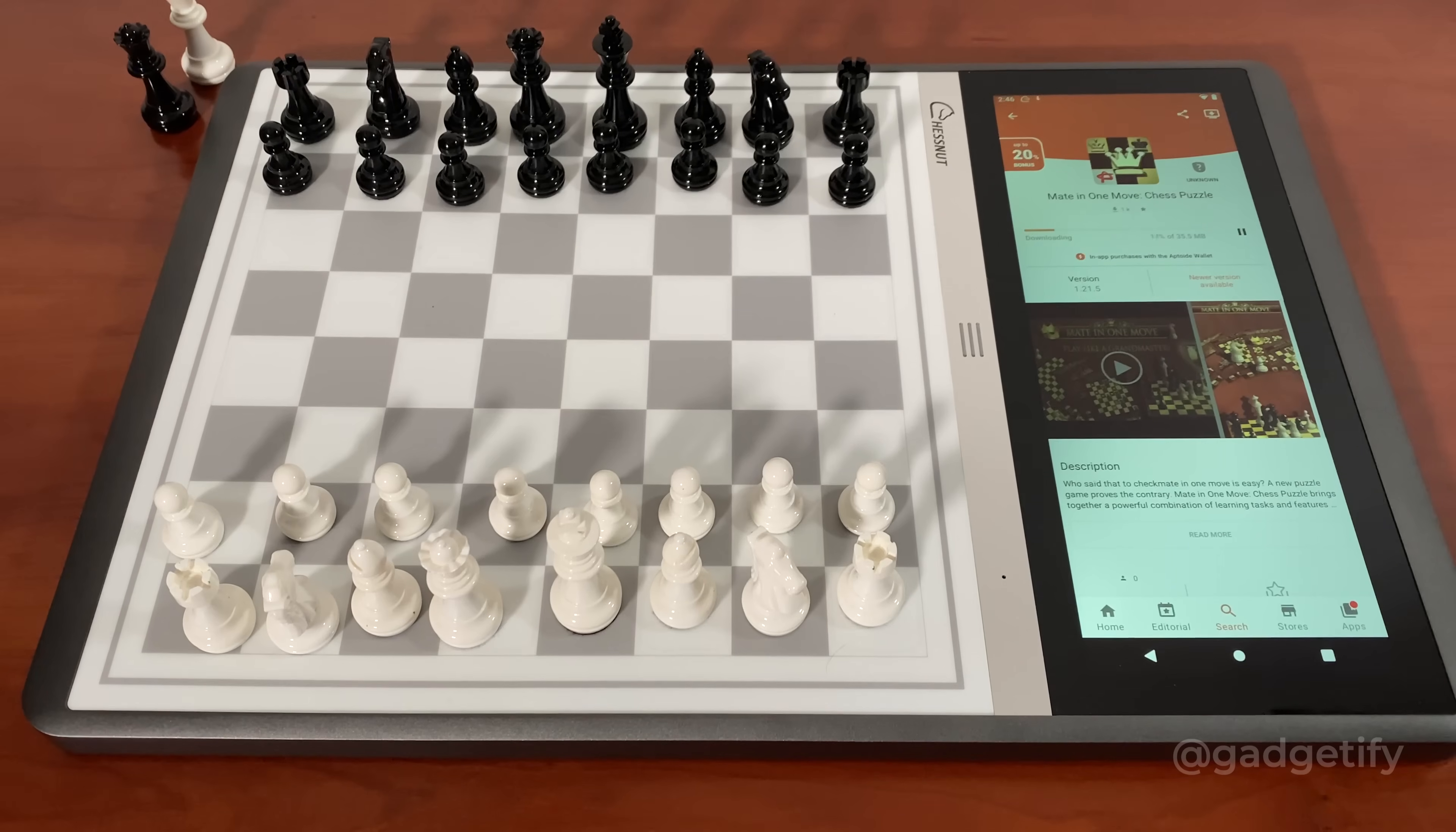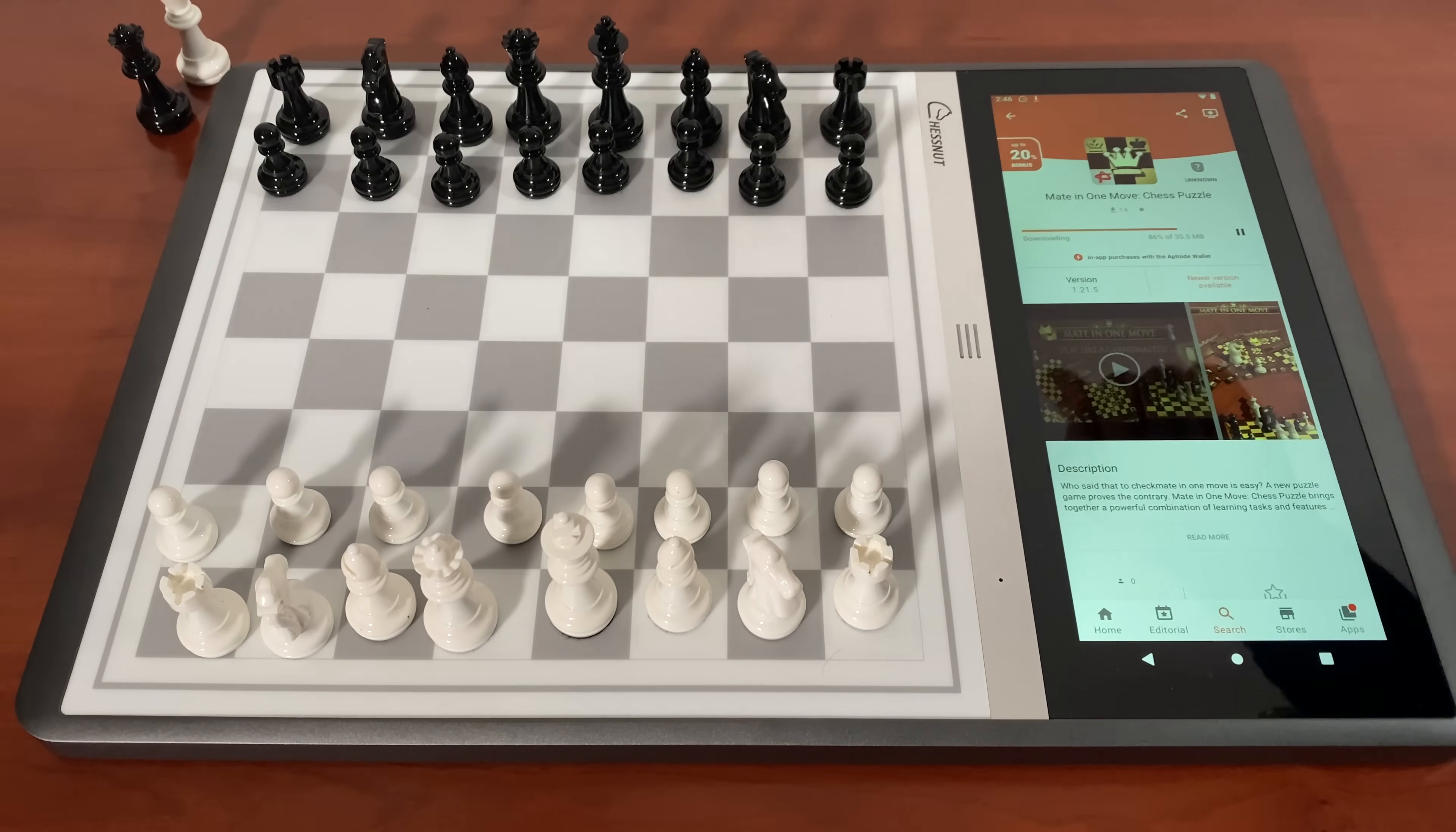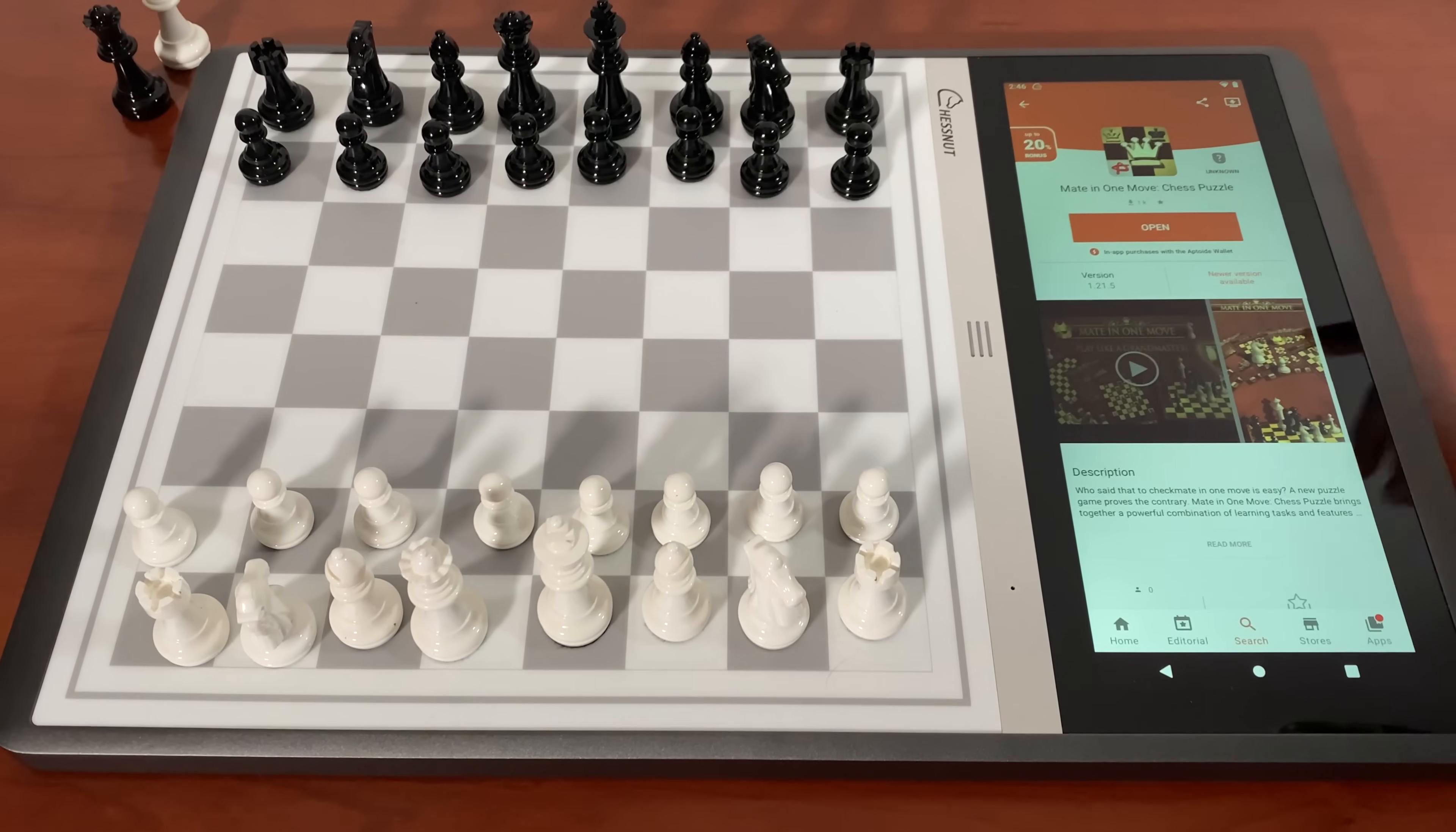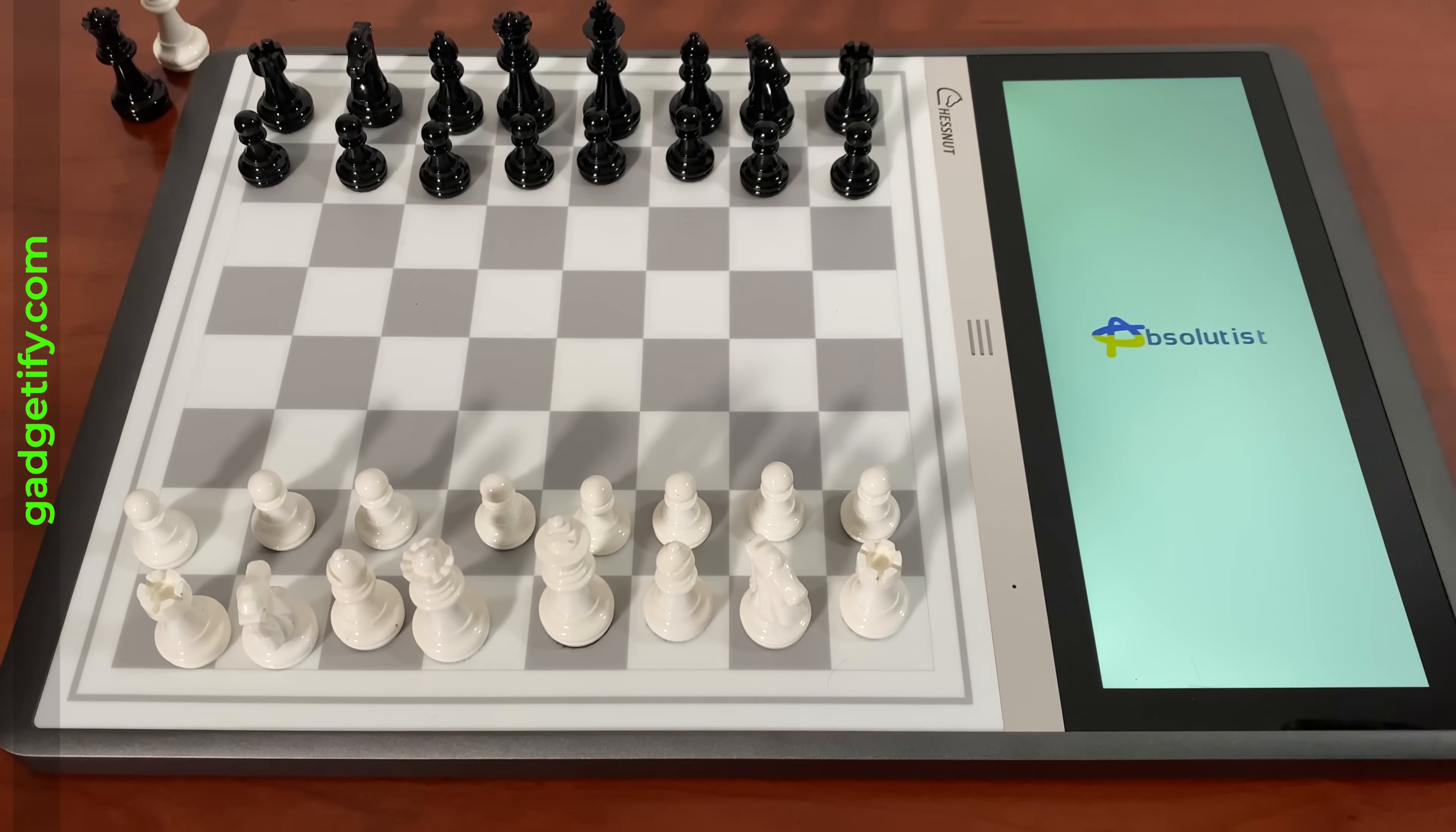The first part is to go to Apptoid and you can do that by going to Firefox on this tablet. And then from there you follow the instructions, you get set up with Apptoid, and then you can use this application, for example, which normally wouldn't be available on this tablet.